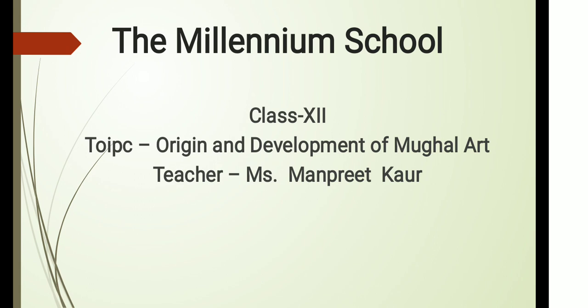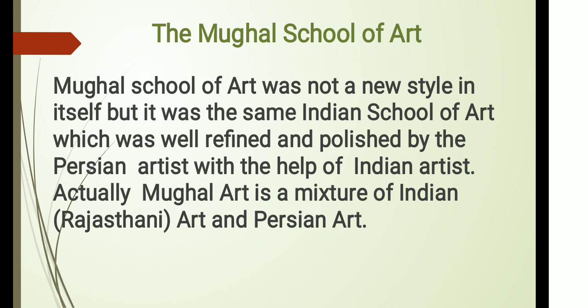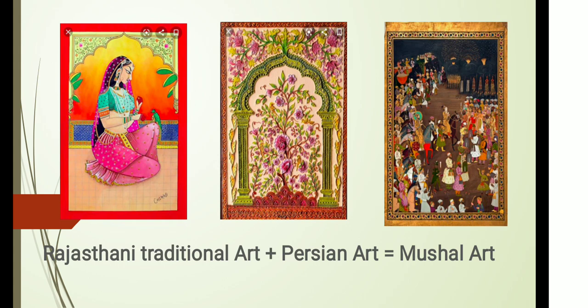The Mughal School of Art. Its period was 15th century to 18th century AD. Mughal School of Art was not a new style in itself, but it was the same Indian school of art which was well refined and polished by the Persian artist with the help of Indian artists. Actually, Mughal art is a mixture of Indian Rajasthani art and Persian art. Here I have one example: this lady sitting is Indian Rajasthani traditional art, the second one is Persian art, and the third one is Mughal art. Rajasthani traditional art plus Persian art equals Mughal art.